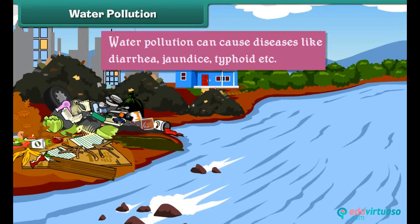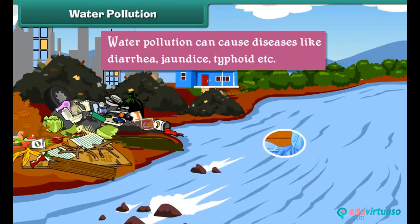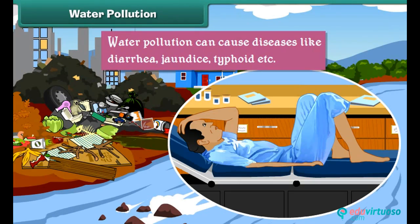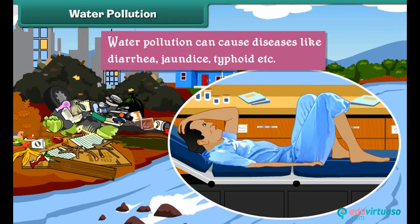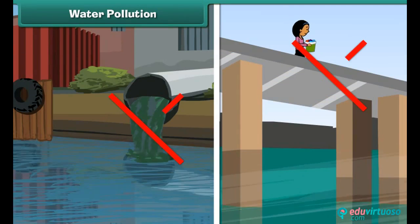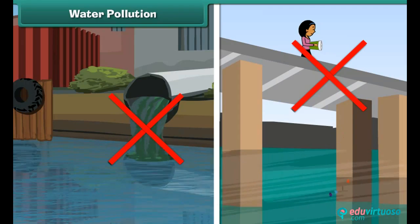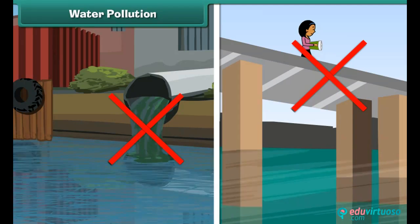Water pollution can cause diseases like diarrhea, jaundice, typhoid, etc. We can reduce water pollution by preventing the disposal of waste into water.